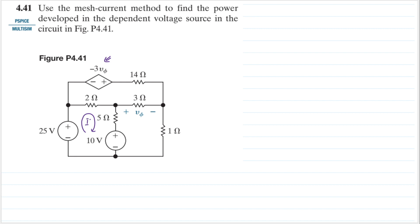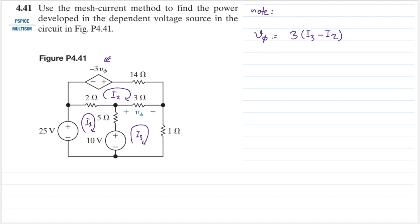Let's draw our loops here. This one is loop i1, this loop is i2, and this loop is i3. Let's take note: we have v_phi here, and v_phi equals (i3 minus i2) multiplied by 3. That is v_phi.